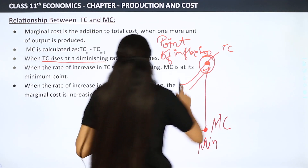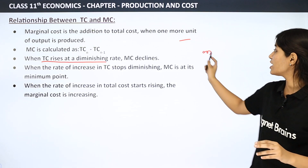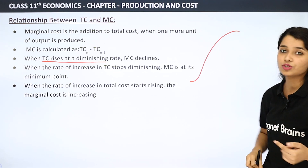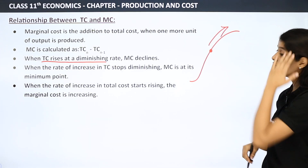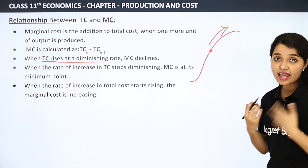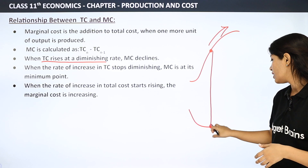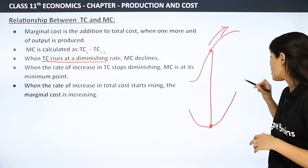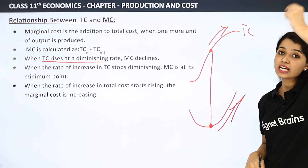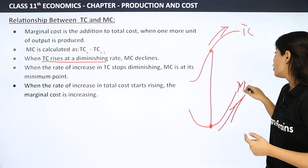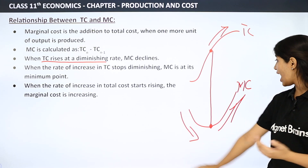At the point of inflection, our MC is at its minimum point. Then, when the rate of increase in total cost starts rising — after the point of inflection TC was at a diminishing rate, now it increases at an increasing rate — our marginal cost is at minimum at that point, and after that our marginal cost will start to increase. First it falls, then it is minimum, and now it will increase.